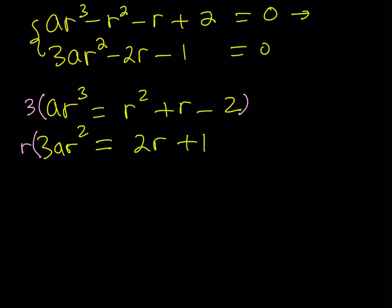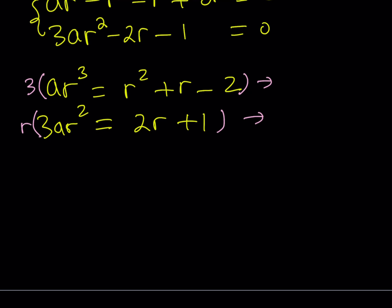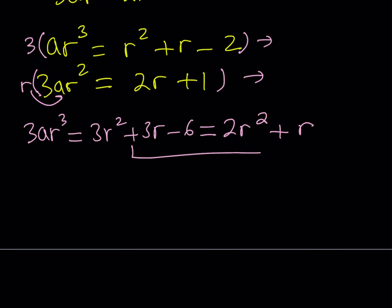You could multiply by negative r and add, but I'm going to set them equal to each other. On the left-hand side I should be getting 3ar³ = 3r² + 3r - 6, and on the second equation I'm also getting 3ar³, so I can basically set it equal to 2r² + r. If two things are equal to the same thing, then they're equal. That's what I'm talking about.